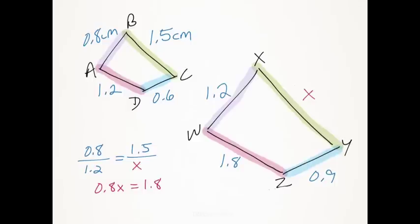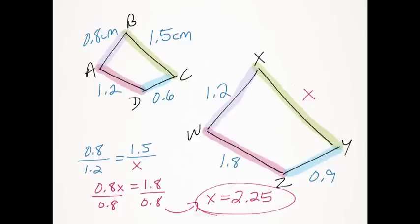So I've just replaced that value down here with x and cross-multiply to 0.8x here. 1.2 times 1.5 will give you 1.8. I'm going to divide both sides by 0.8. And the solution is going to be 2.25, which was our measurement up here before.